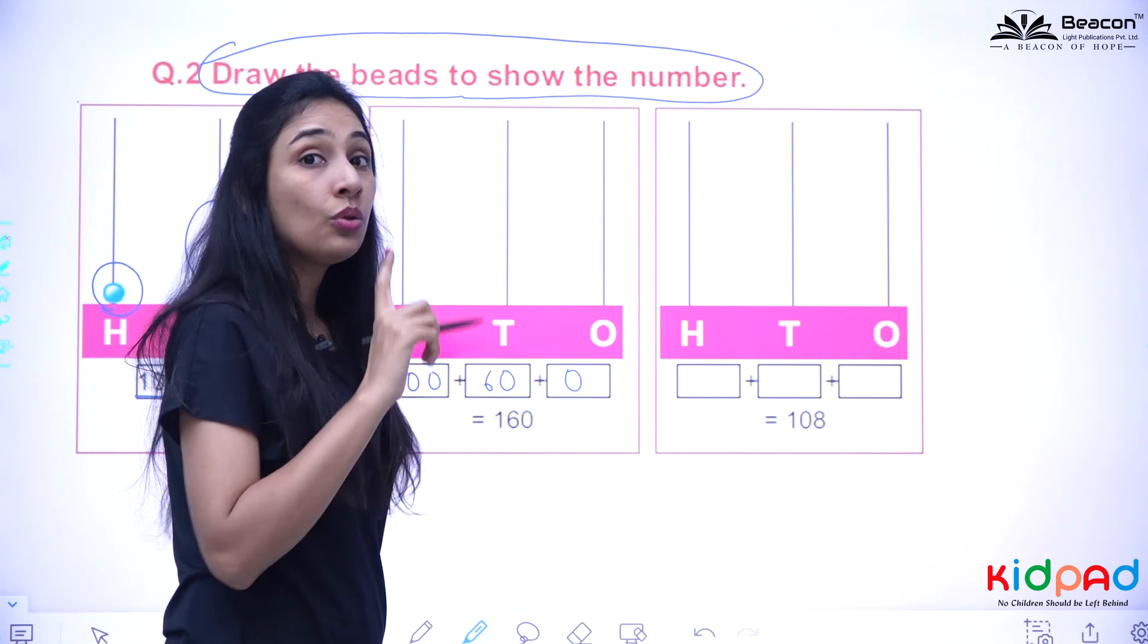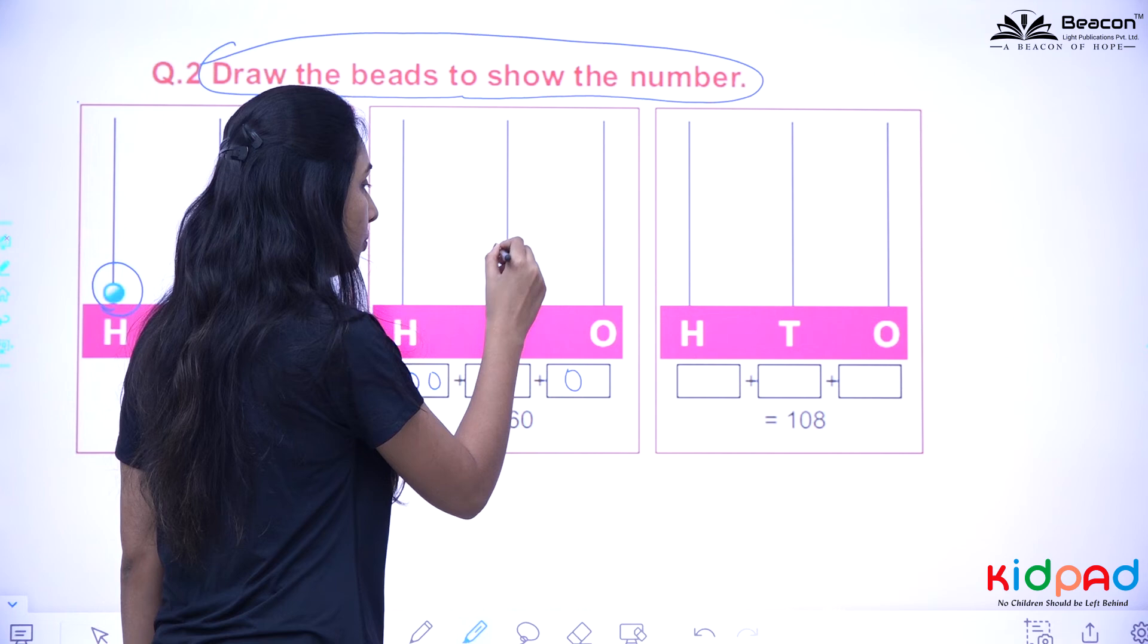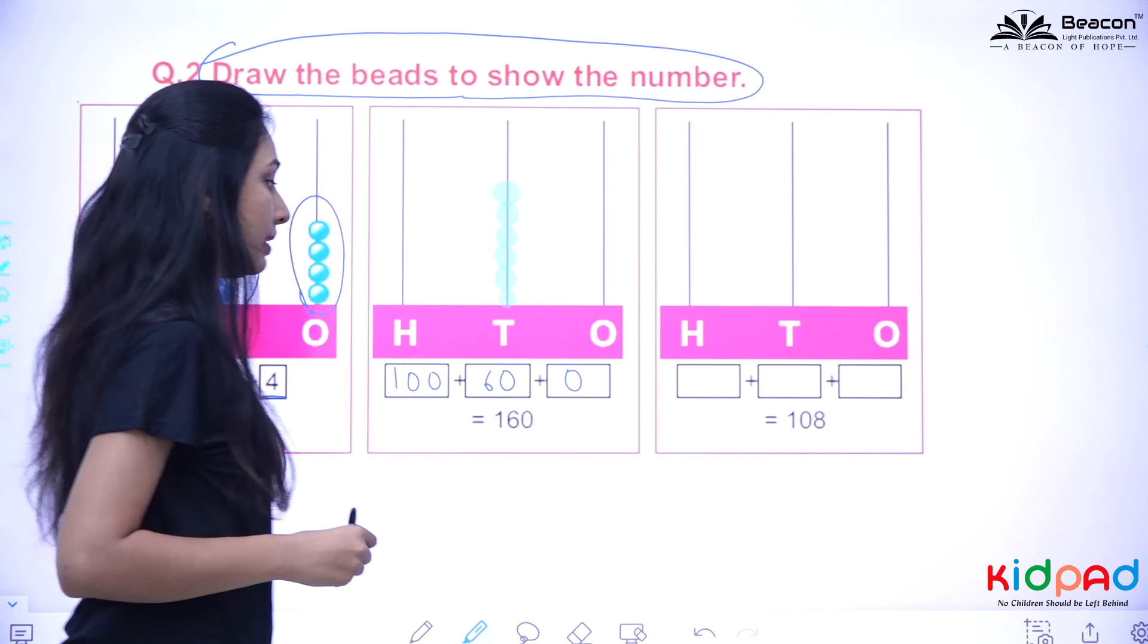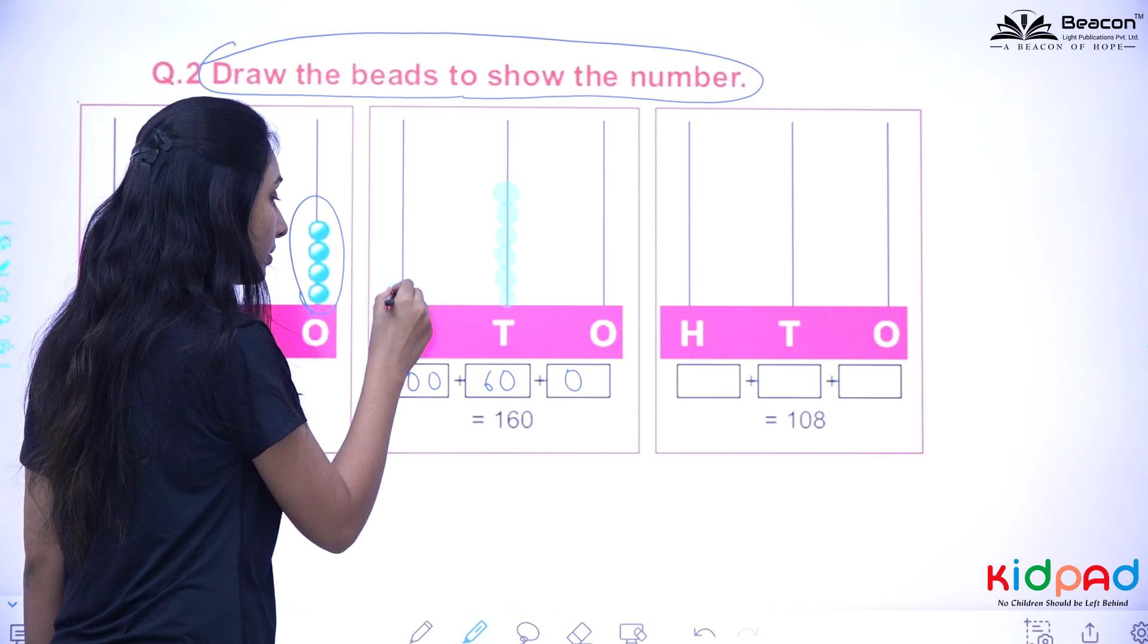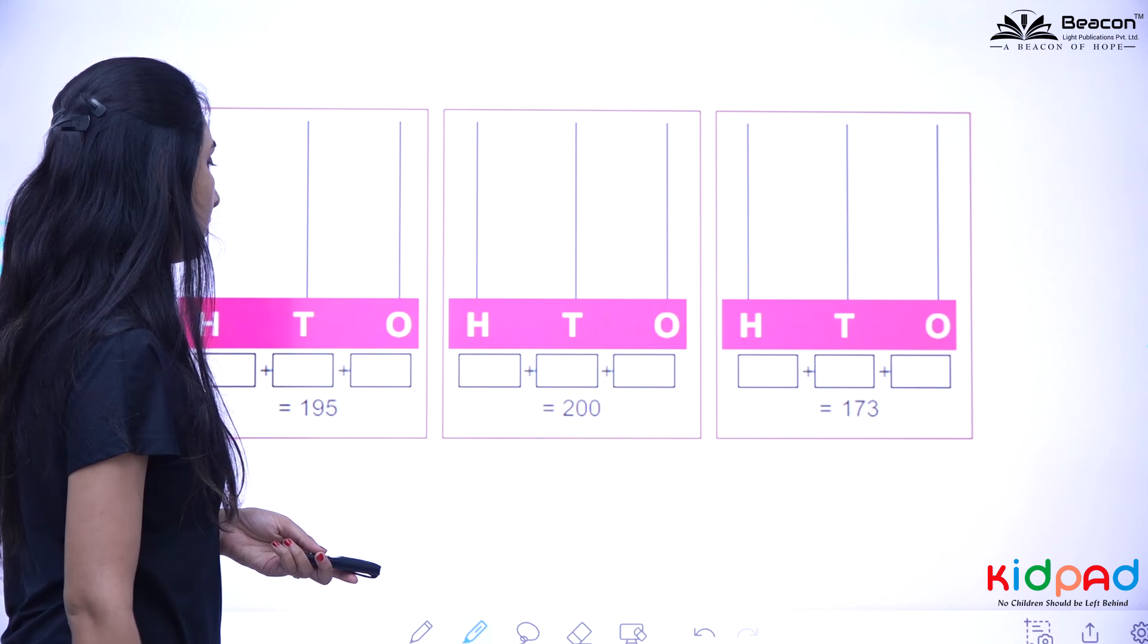Now show it on the beats. You are having zero ones, so you will be having no beats here. On the tens place, you are having six, sixteen, that means six tens. So six beats. One, two, three, four, five, and six. Six beats. And you are having one hundred. So one beat. This is how you are going to show this on your abacus. Now do it by your own.